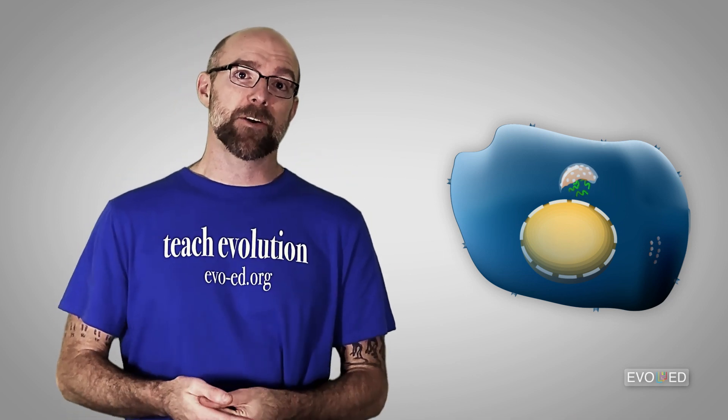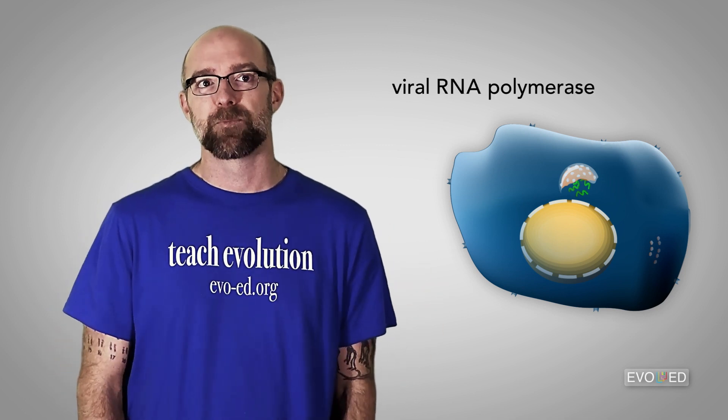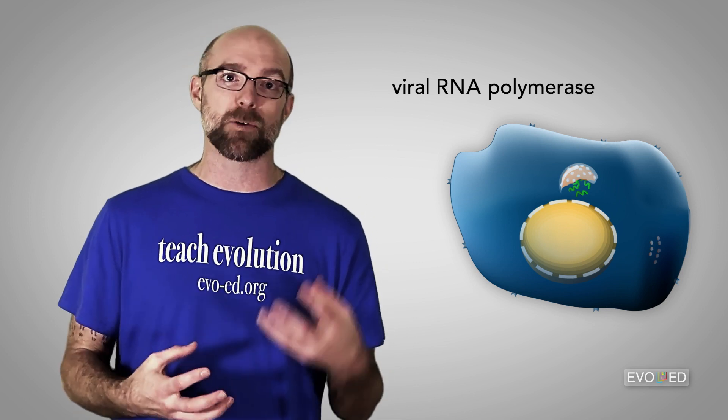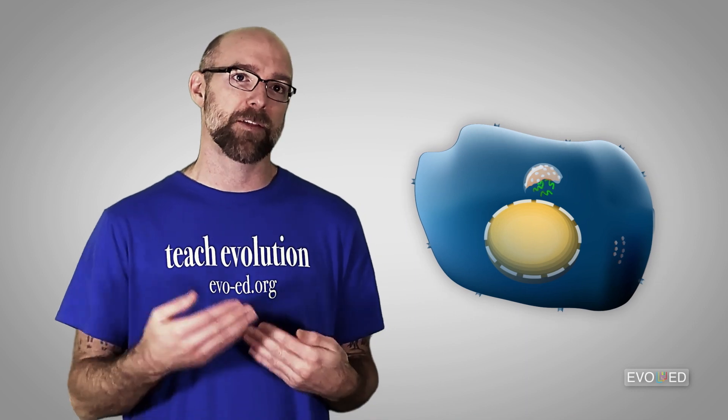Sometimes, the viral genetic material has within it the instructions to make its own viral DNA polymerase or RNA polymerase. These viral polymerase enzymes play a role in replicating the viral DNA or RNA along with the help of proteins from within the host cell.